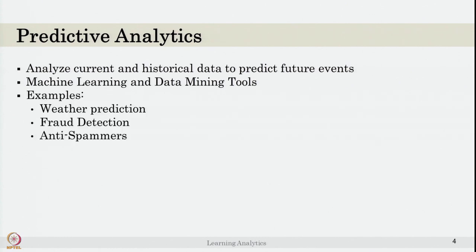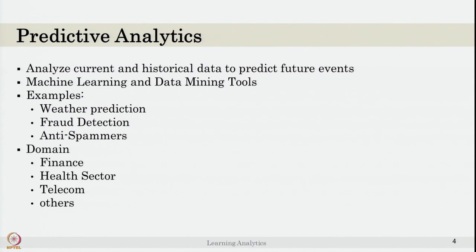Other than the education domain, predictive analytics has been used widely for various other predictions — fraud detection in credit cards or loans, anti-spam filters in email where messages are classified as spam or not spam. Example domains include finance for predicting credit card or loan risk, the health sector for predicting insurance claims, and the telecom sector to predict which users will drop out or upgrade to a higher package. This is a main application area of machine learning across all domains.